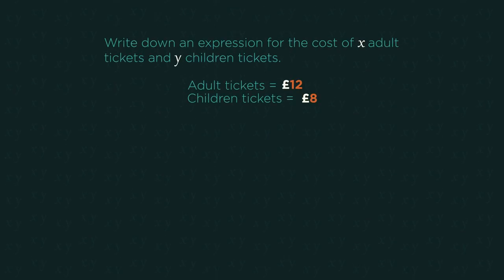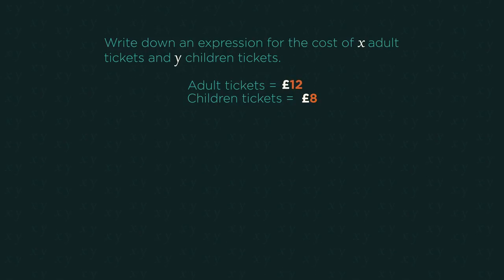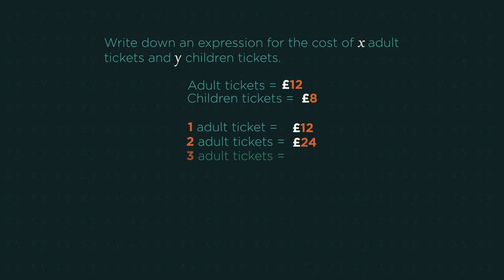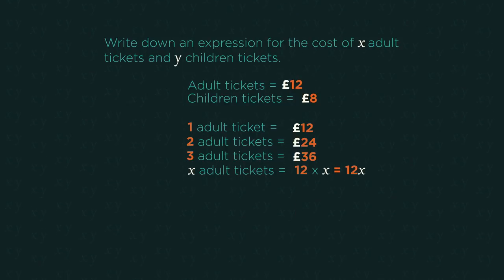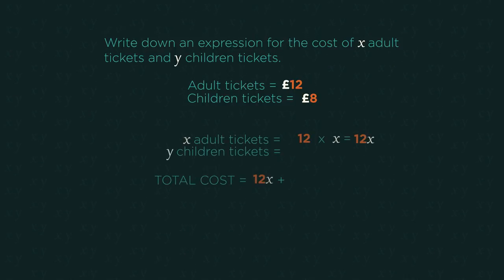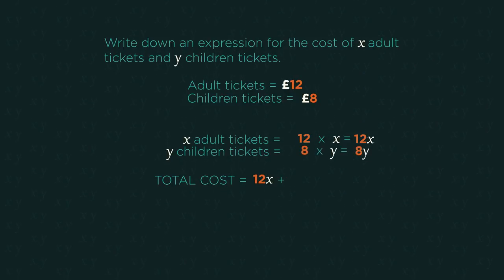What if we had two sentences to write into an expression? We're buying X adult tickets that cost £12 each. One adult costs 12, two adults cost 24, three adults cost 36. So we multiply the £12 by how many adults there are — so 12X. We now need to add the children to the total cost. 8Y children, so the total cost is 12X plus 8Y.